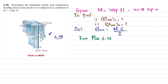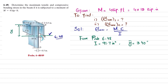From problem 6-48: I is equal to 91.73 in⁴, and y-bar, which is the location of the neutral axis from the top surface, is 3.40 inches. So this neutral axis is located at y-bar = 3.40 inches from the top.